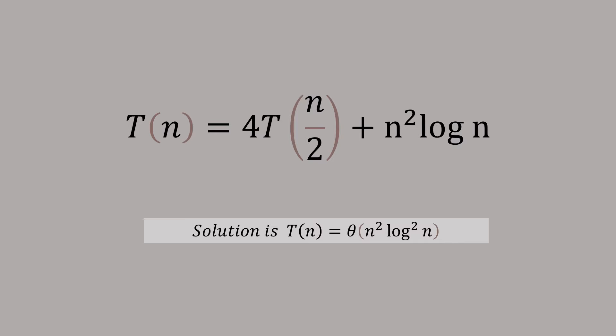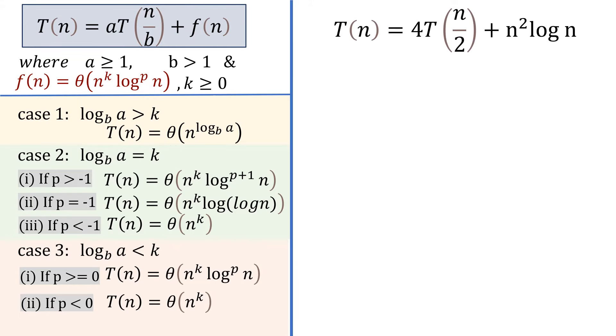Let's see how to solve this. Again, the same thing: you have to find out a, b, k and p. Comparing it with the standard formula, you can easily say that a equals 4, b equals 2. Comparing this with n^k log^p n, you can say k equals 2 and p equals 1.